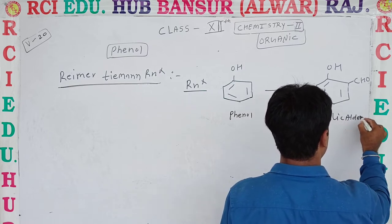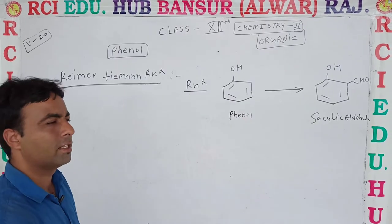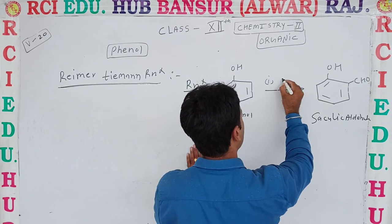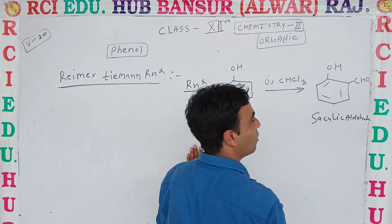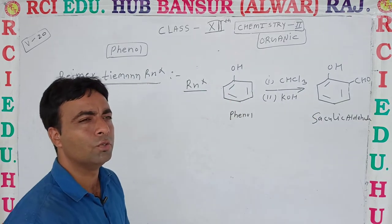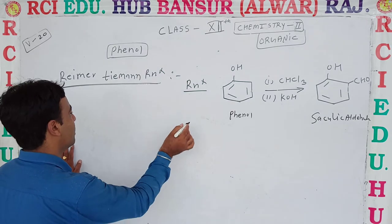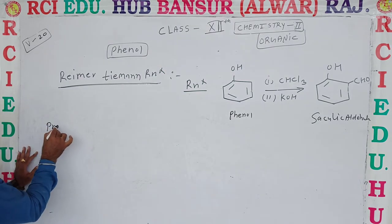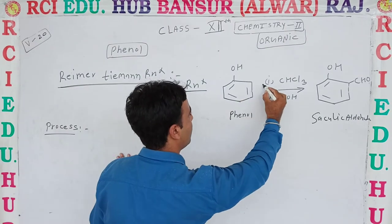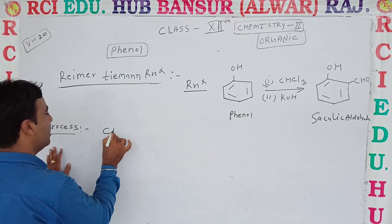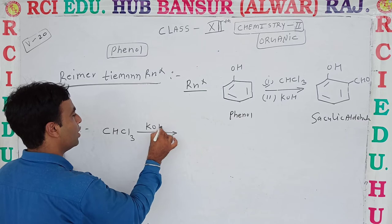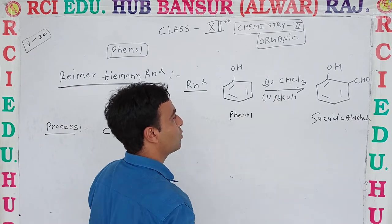Salicylaldehyde formation — how does it occur? The reagents used in this reaction are chloroform (CHCl3) and potassium hydroxide (KOH). CHCl3 decomposes in the presence of potassium hydroxide — approximately three moles of KOH are used. The process begins with CHCl3 decomposing in KOH to form trichloromethyl carbanion (CCl3⁻), which is unstable.